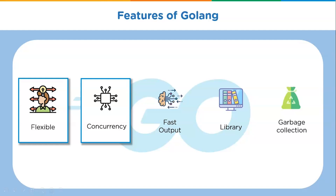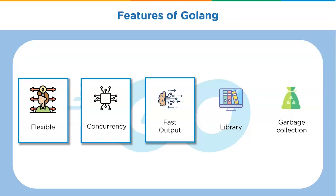Next is fast output. Go comes with very quick compilation time. In the Golang development environment, there is no virtual machine — the code is directly compiled to machine code, making compilation faster and more effective. The compiler produces only one executable file after compilation. This file does not suffer from dependencies and can be uploaded and run anywhere, making code execution faster.